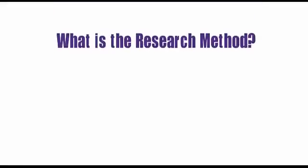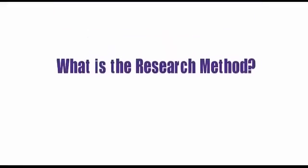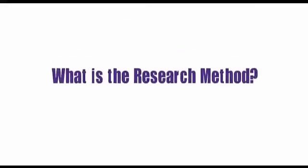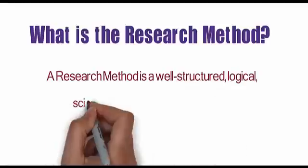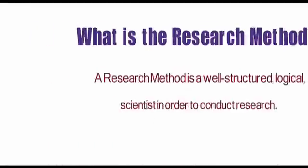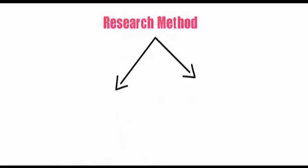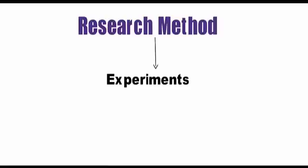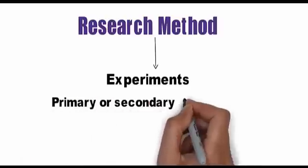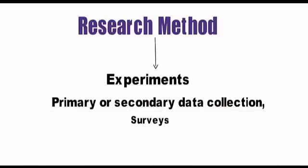What is the research method? A research method is a well-structured, logical, or standard plan utilized by a researcher or a scientist in order to conduct research. For instance, sociologists during the course of their research depend on both qualitative and quantitative research methods such as experiments, primary or secondary data collection, surveys, participant study, or observation.